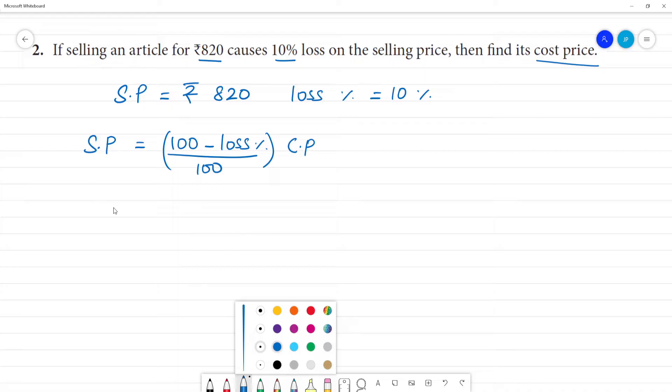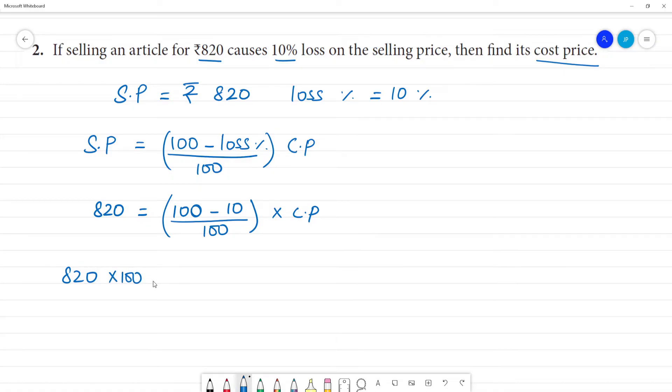If selling price is Rs.820 which is equal to 100 minus loss, 10 divided by 100. This 100 and this 100 is cancelled by 100 into CP. So, if you have 820, this 100 is denominator in the numerator. So, if you have 820, multiply by 100 which is equal to 100 minus 10 is 90 into CP.